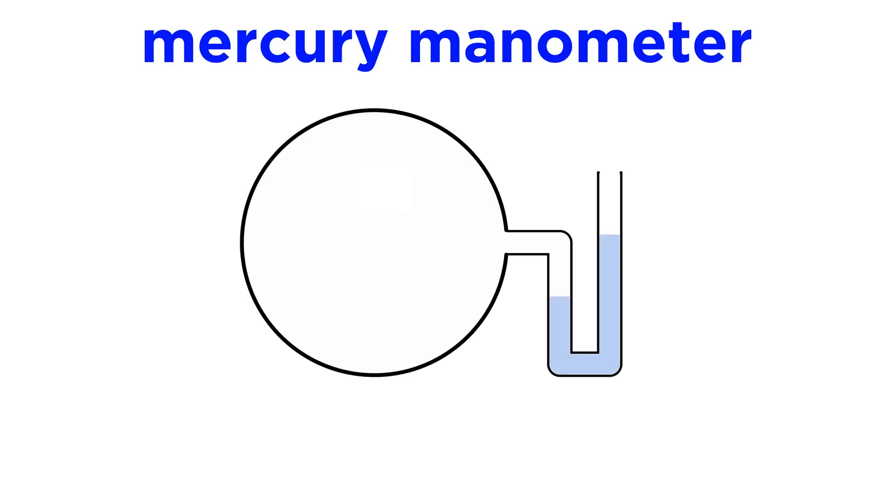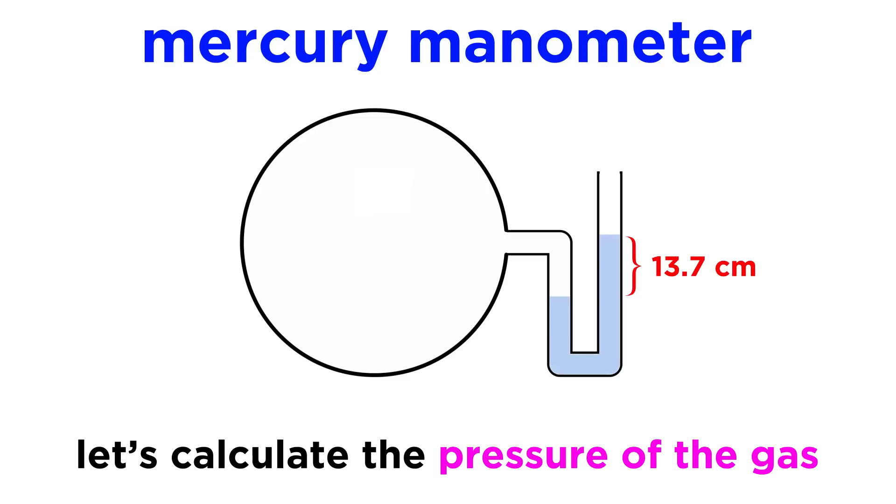Let's say instead we are looking at an open-end manometer. Here we measure the difference in height as being 13.7 centimeters. Assuming this is taking place at sea level, what is the pressure of the gas?